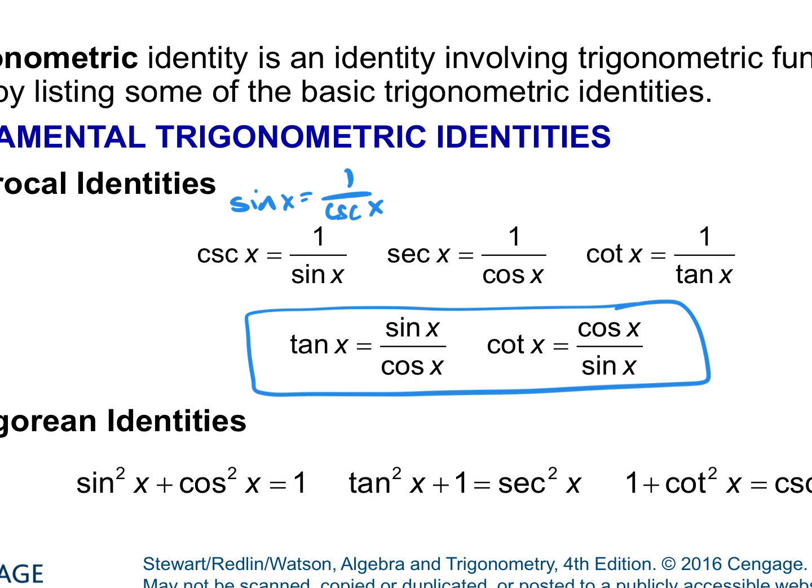Tangent is the same as sine over cosine, and cotangent is the same as cosine over sine. Remember: the two most basic trig functions we talk about are sine and cosine.